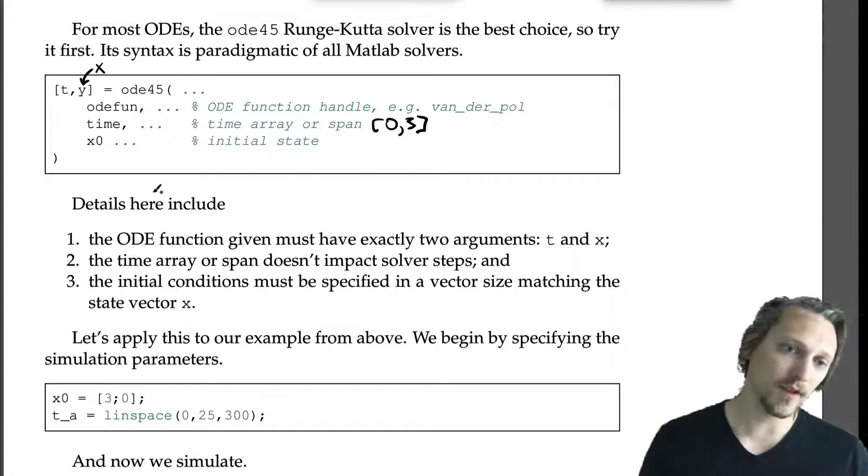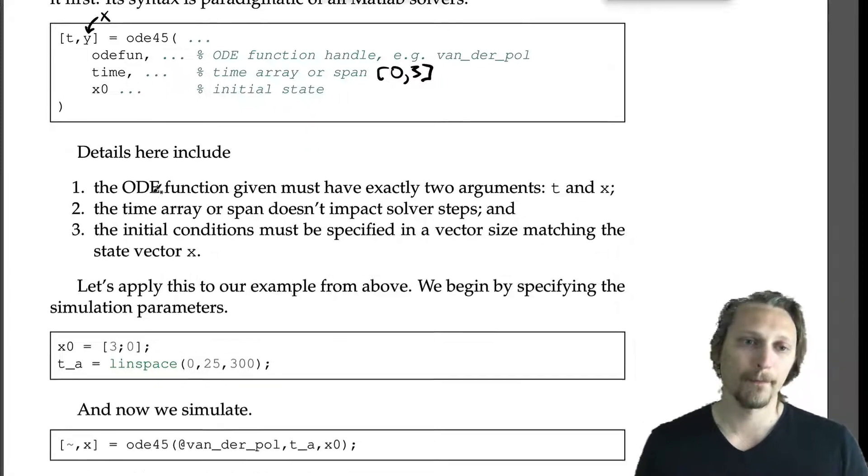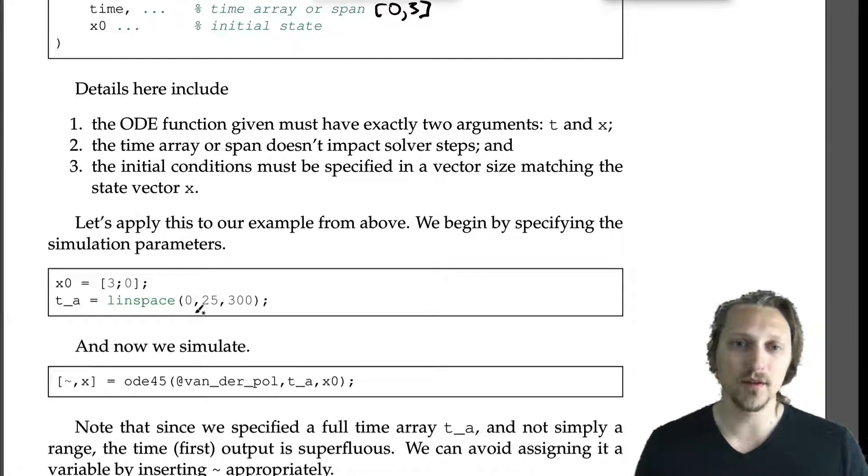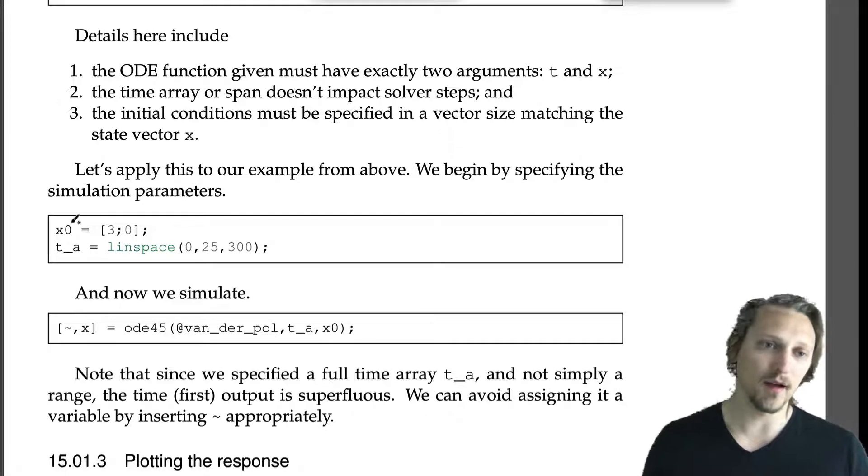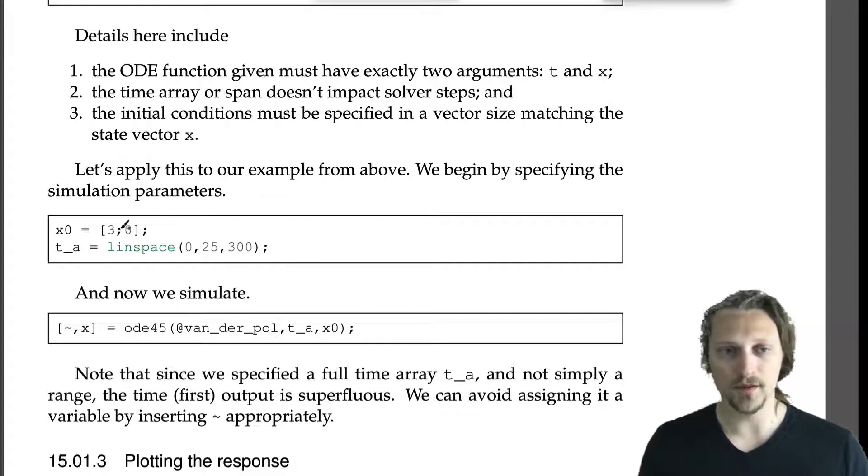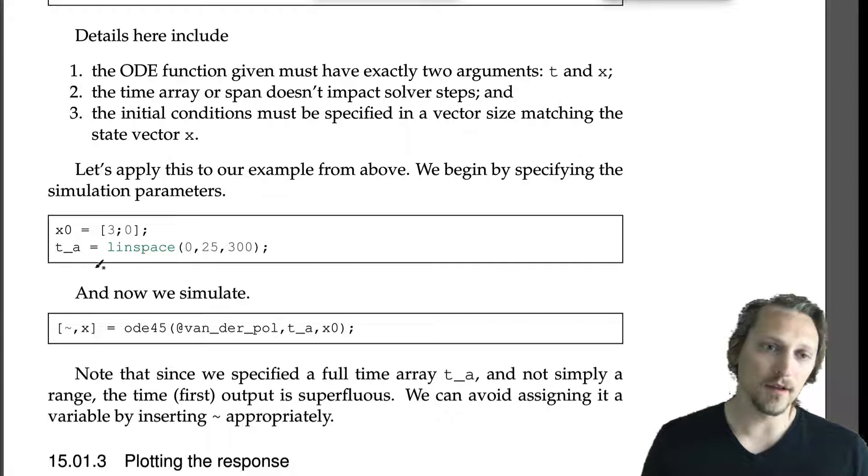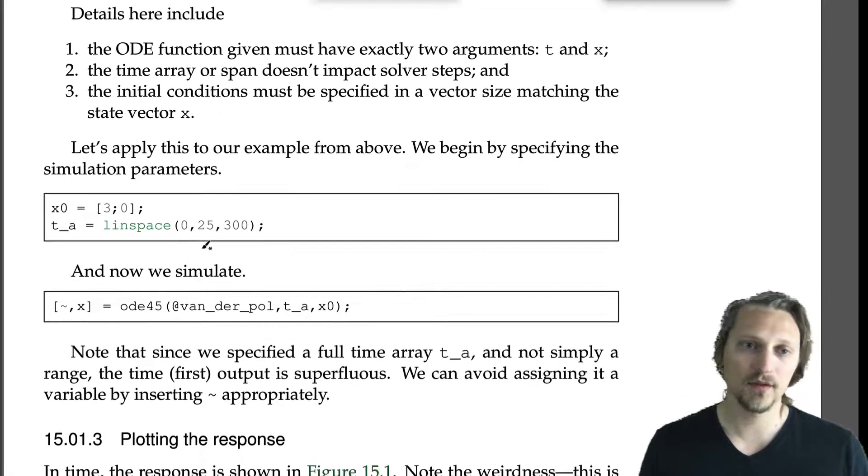And three: the initial conditions must be specified in a vector size matching the state vector x. So if your state vector x—if you have like a fourth-order system, you know, a four by one vector—your initial state has to be a four by one vector as well. So let's apply this to our example from above. We begin by specifying the simulation parameters.